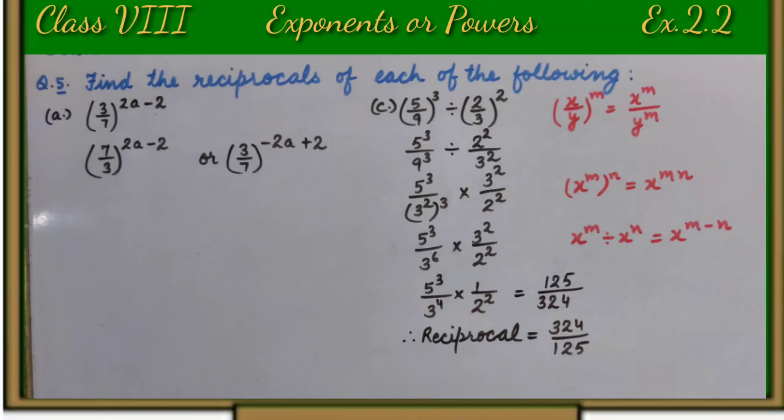Hence, we get 5 raise to power 3 upon 3 raise to power 6 multiplied by 3 raise to power 2 upon 2 raise to power 2.